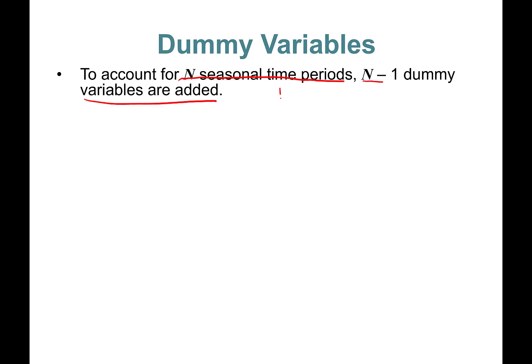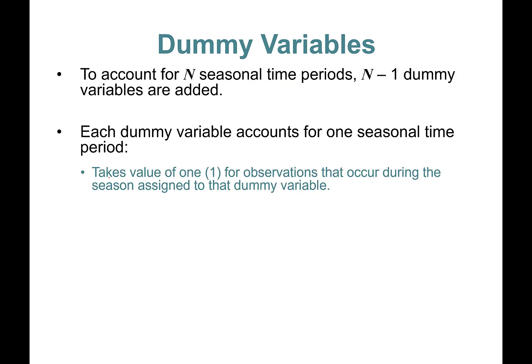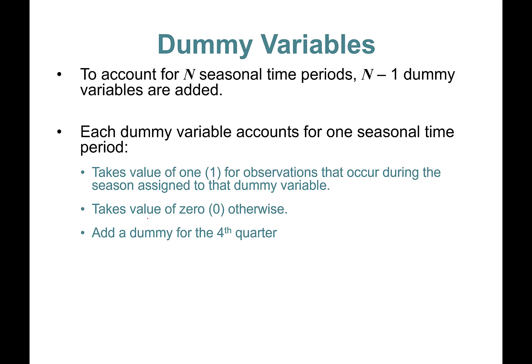To account for n seasonal time periods, n minus one dummy variables need to be added. So if you have four quarters, you would include dummies for first, second, and third quarters. Each dummy variable accounts for one seasonal time period — it takes a value of one for observations that occur during the season assigned to that dummy, and zero otherwise.